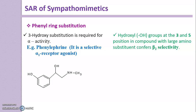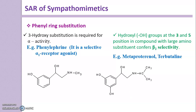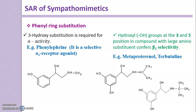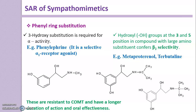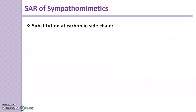Hydroxyl groups at the third and fifth positions, combined with a large amino substituent, confer Beta-2 selectivity — meaning the drug binds selectively to Beta-2 receptors. Examples: Metaproterenol and Terbutaline. Both have hydroxyl groups at the third and fifth positions, and the amino group has a larger alkyl group attached, giving selectivity toward Beta-2 receptors. Since these compounds do not contain the Catechol Nucleus, they are resistant to COMT and have a longer duration of action and oral effectiveness.